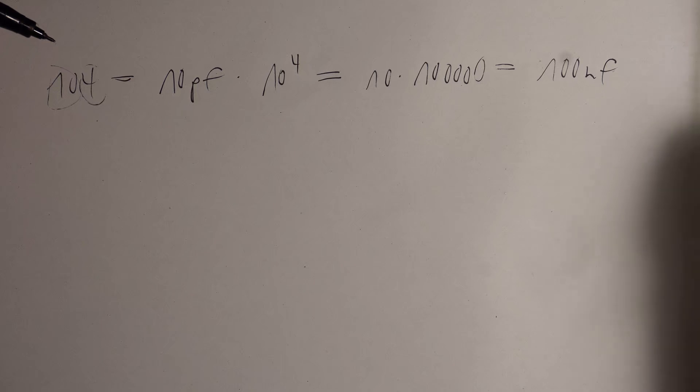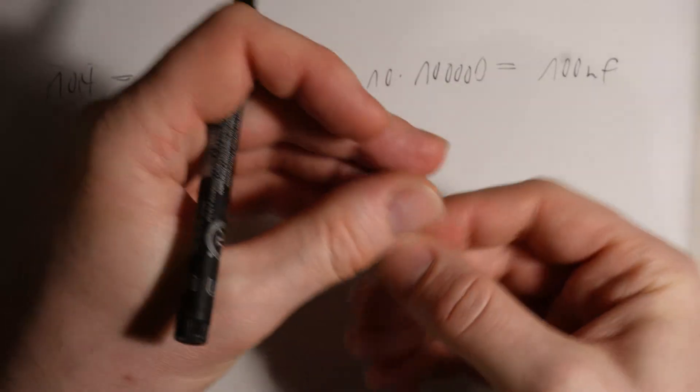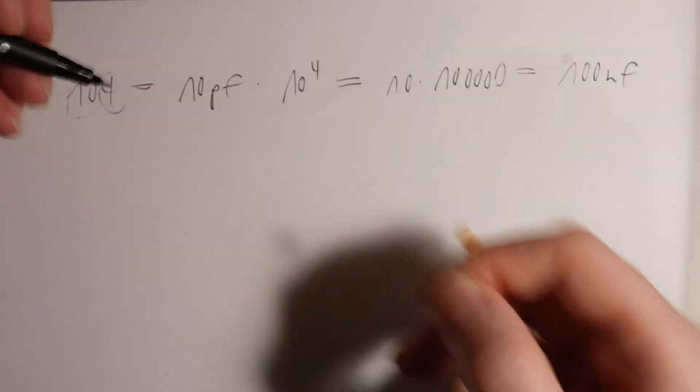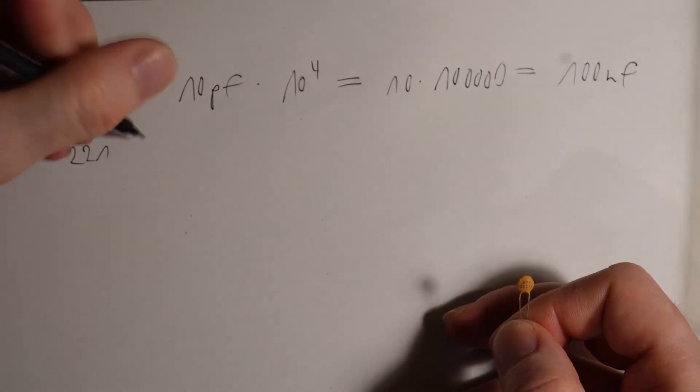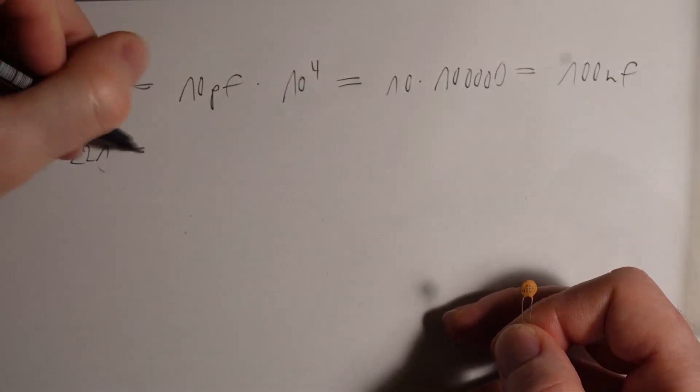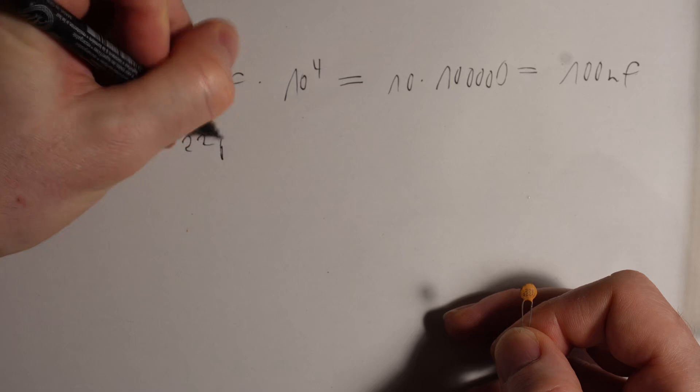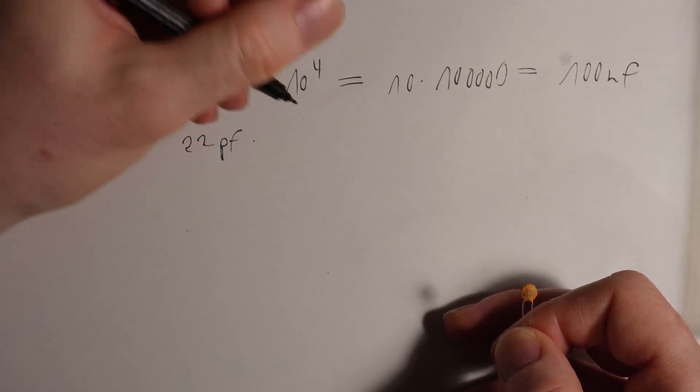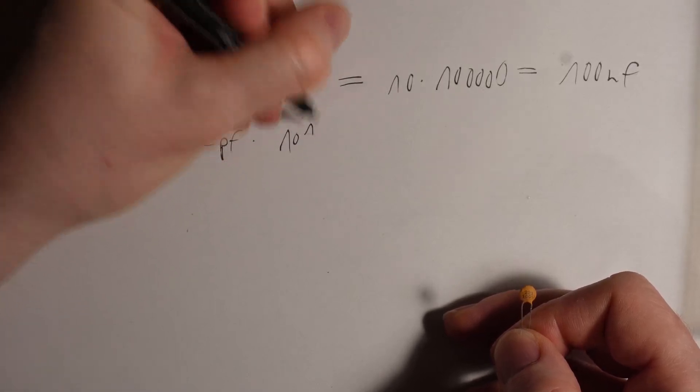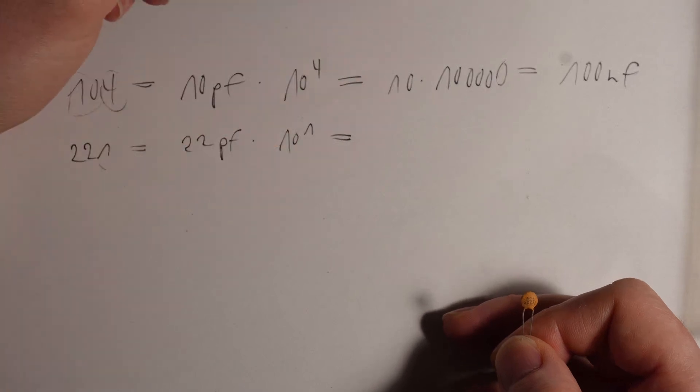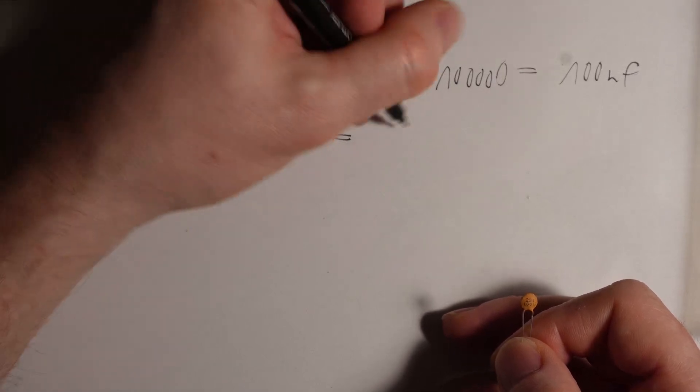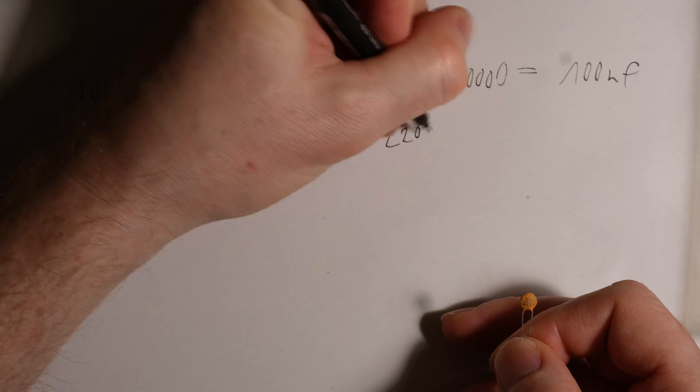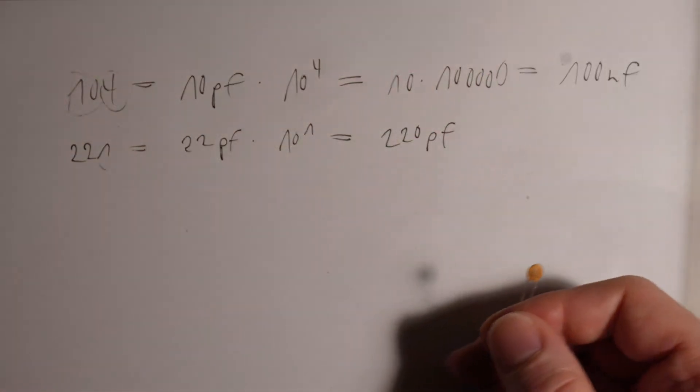This also works here for smaller sizes. So here on this one is a 221. So the exponent here is the 1. This would be 22 picofarads times 10 exponent 1. So this would be 220 picofarads here for example.